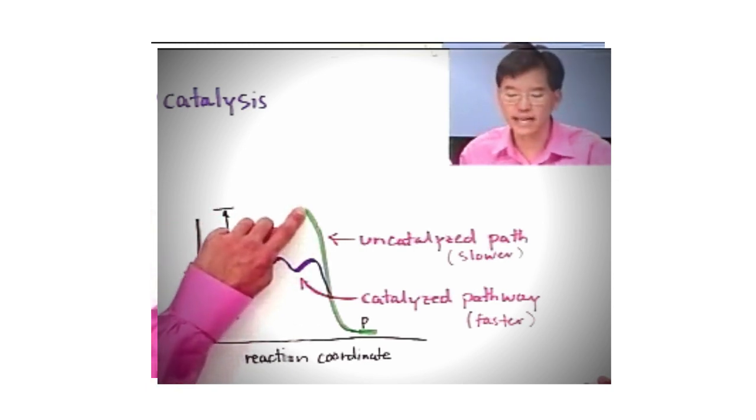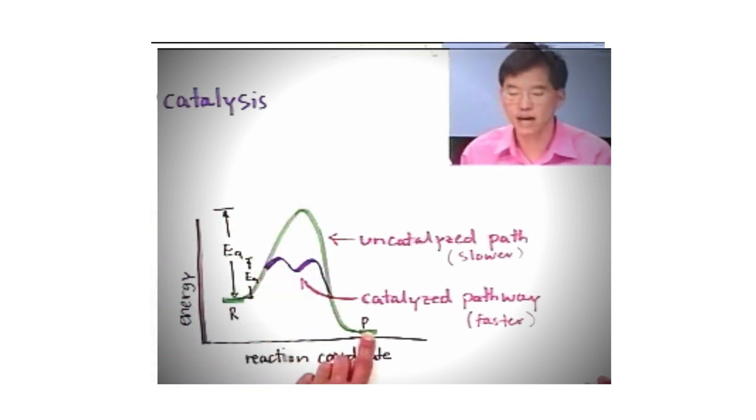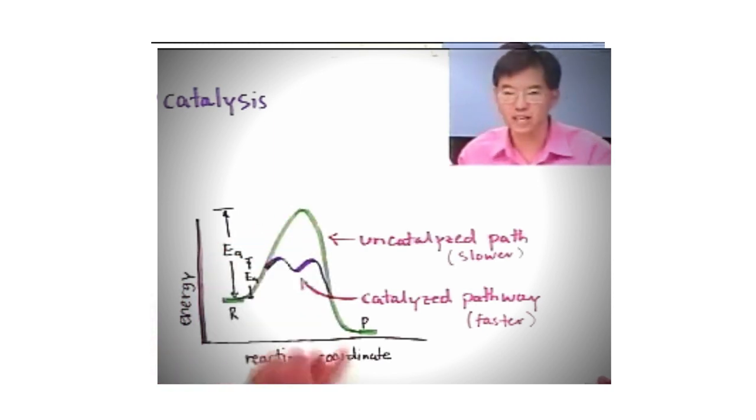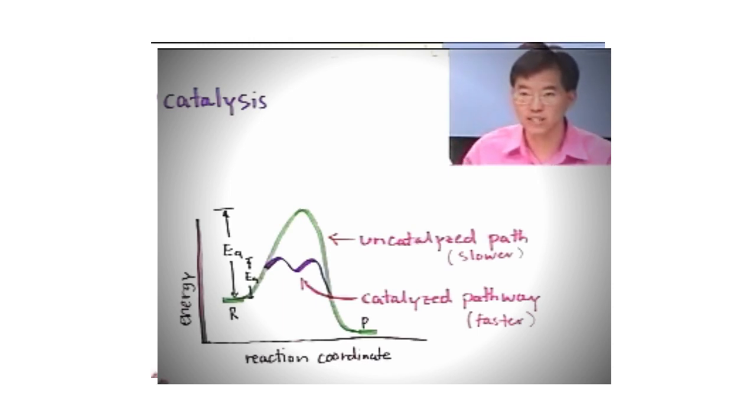And then once you get to there, the reaction slides on down to products, and this is an exothermic reaction as indicated by the fact that reactants are higher in energy than products. And if you think about this as just a hill that you have to climb over, it takes a long time to get over the top of a hill. The reaction is slow.